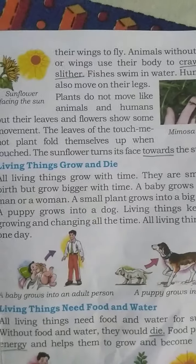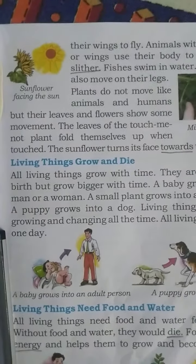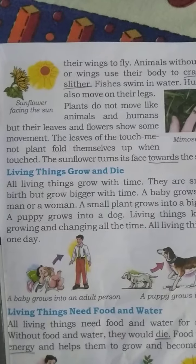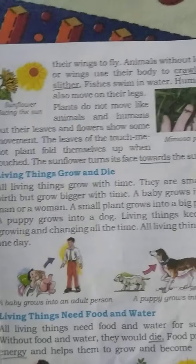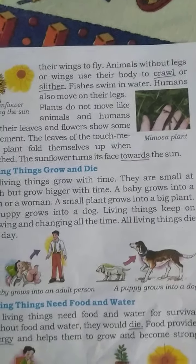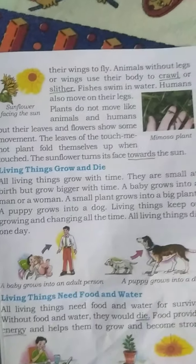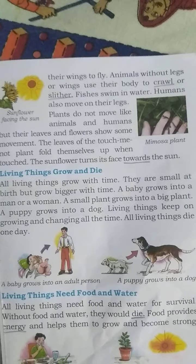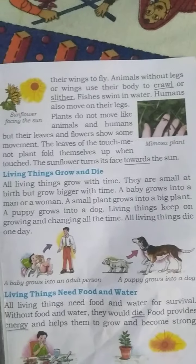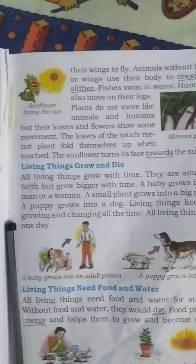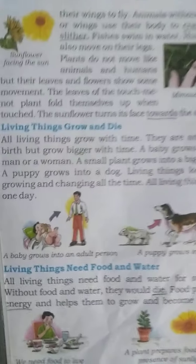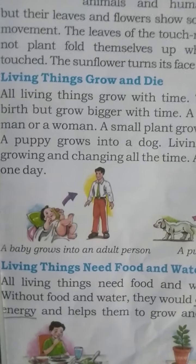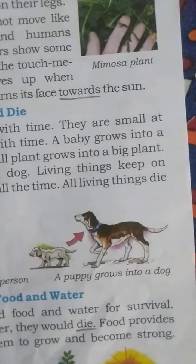A puppy grows into a dog. Living things keep on growing and changing all the time. All living things die one day. Look at the picture students: a baby grows into an adult person, a puppy grows into a dog.